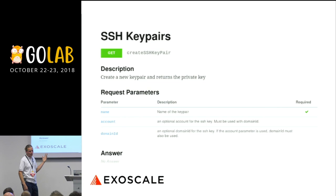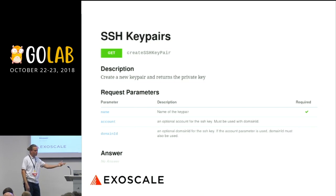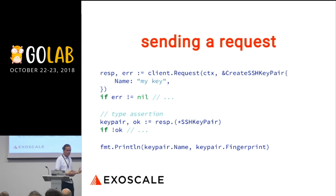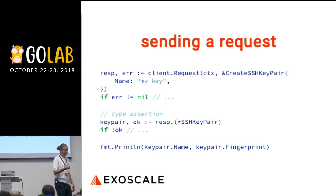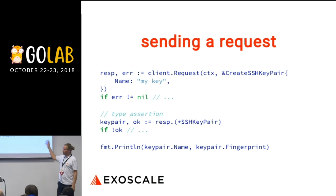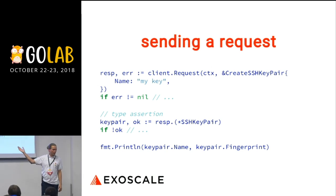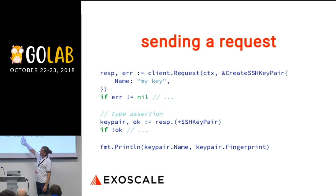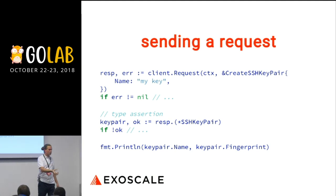Now, for the other trick. The example here is how to create an SSH key pair. When we spawn the machine, the first step was to create the SSH key so that when we connect to it, we use that key — not a password. So this call creates a key. To use it, you have your client, you create the request by saying 'create SSH key', this is the name I want to give to it, I send my request, and if the response is successful, I can extract the response with the key pair, private key, and so on.